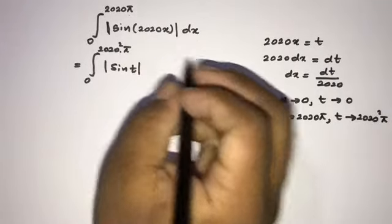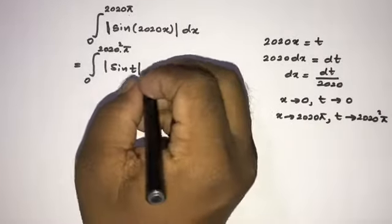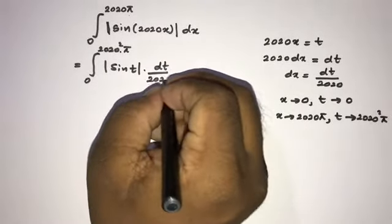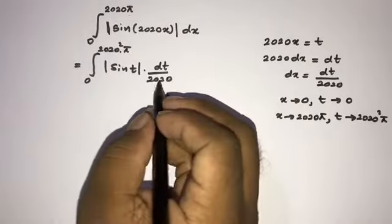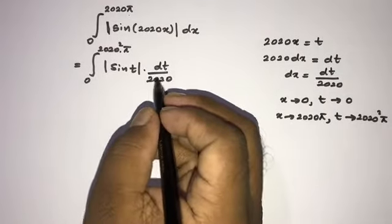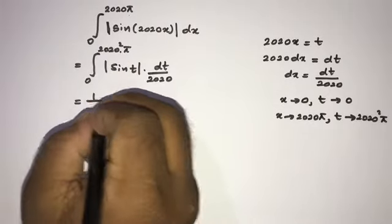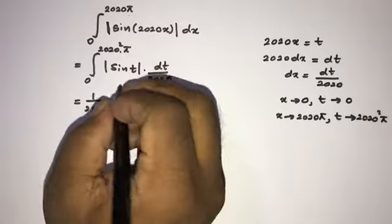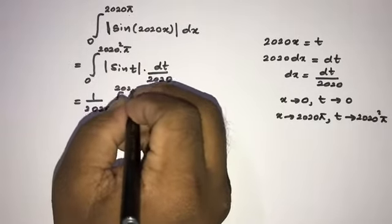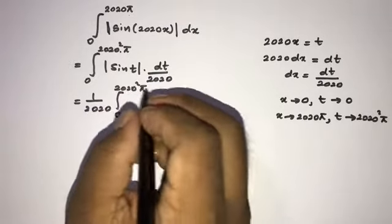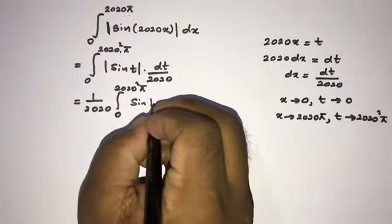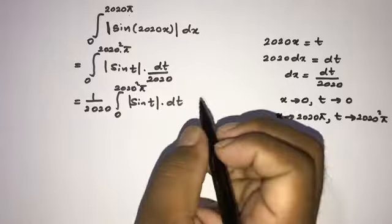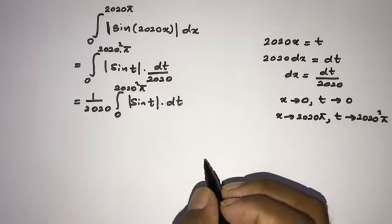After substitution, sine of 2020x becomes sine of t, and dx becomes dt over 2020. Since 1 over 2020 is a constant, we can factor it outside: we get (1/2020) times the integral from 0 to 2020² times π of the absolute value of sine of t, dt.